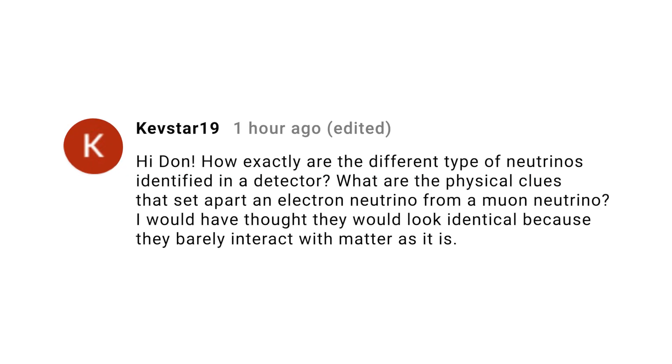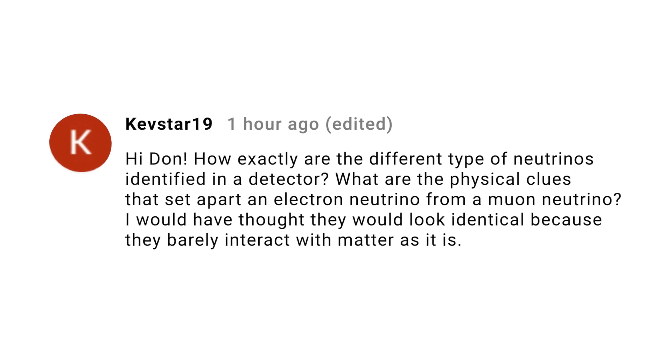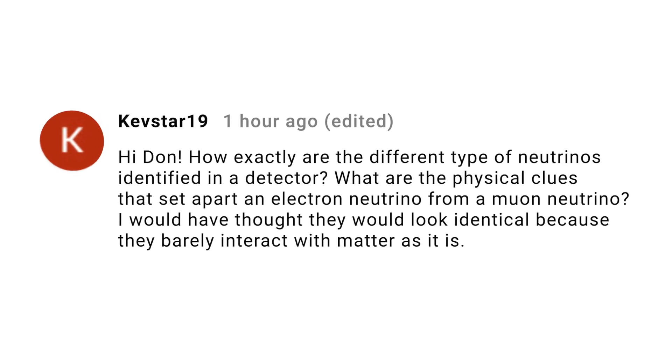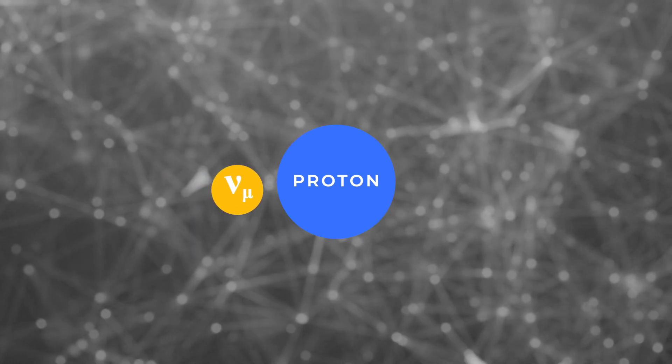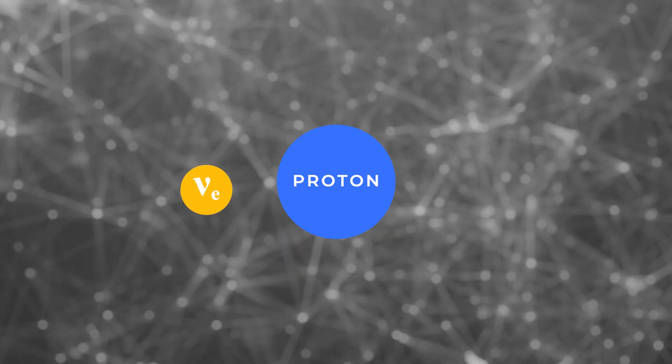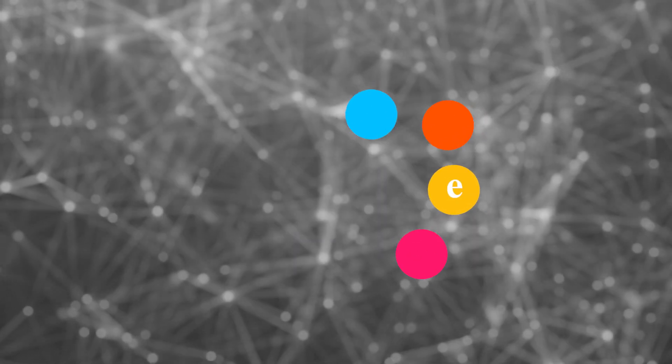By the way, I made a longer video on this idea — the URL is in the description below. Kevstar19 asks how we can identify which type of neutrino interacts in our detector. That actually turns out to be easy. Since neutrinos have an affinity for their associated lepton, a neutrino hits a proton or neutron and it breaks apart. If the neutrino interacts by emitting a W boson, it turns into its associated lepton. So if you see a proton or neutron shatter and a muon appears, it was a muon neutrino; if an electron appears, it was an electron neutrino.